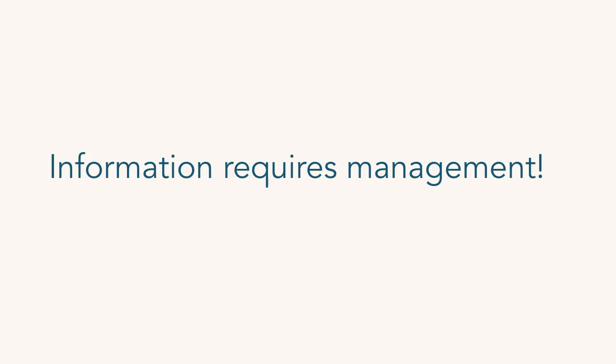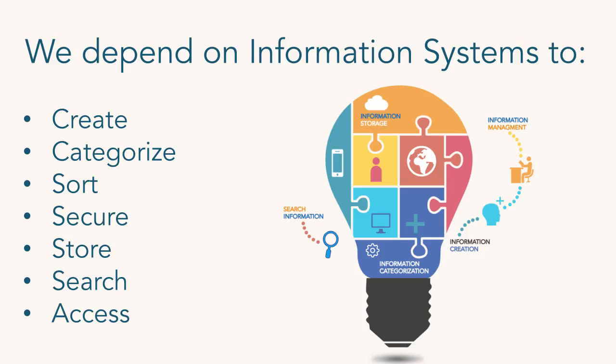Information requires management. Information without management is totally useless — it's just stuff out there, numbers with no relevant value, not associated to anything. So information has to be managed, and the way we do that is with information systems. Information systems allow us to create, categorize, sort, secure, store, and access that information.